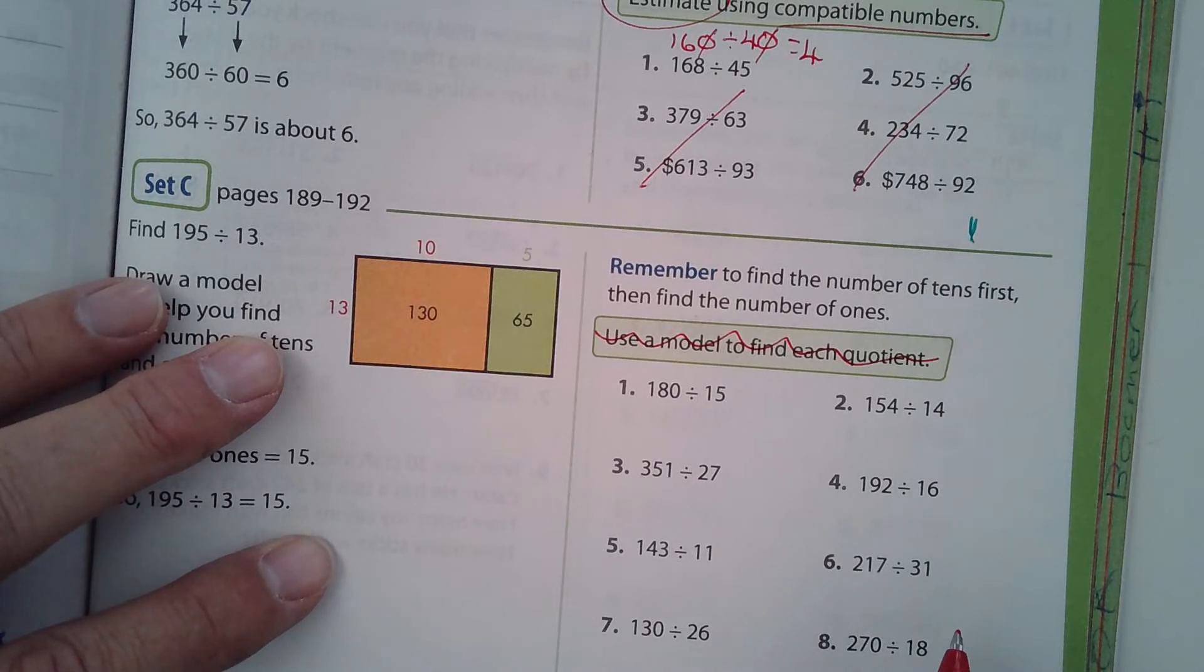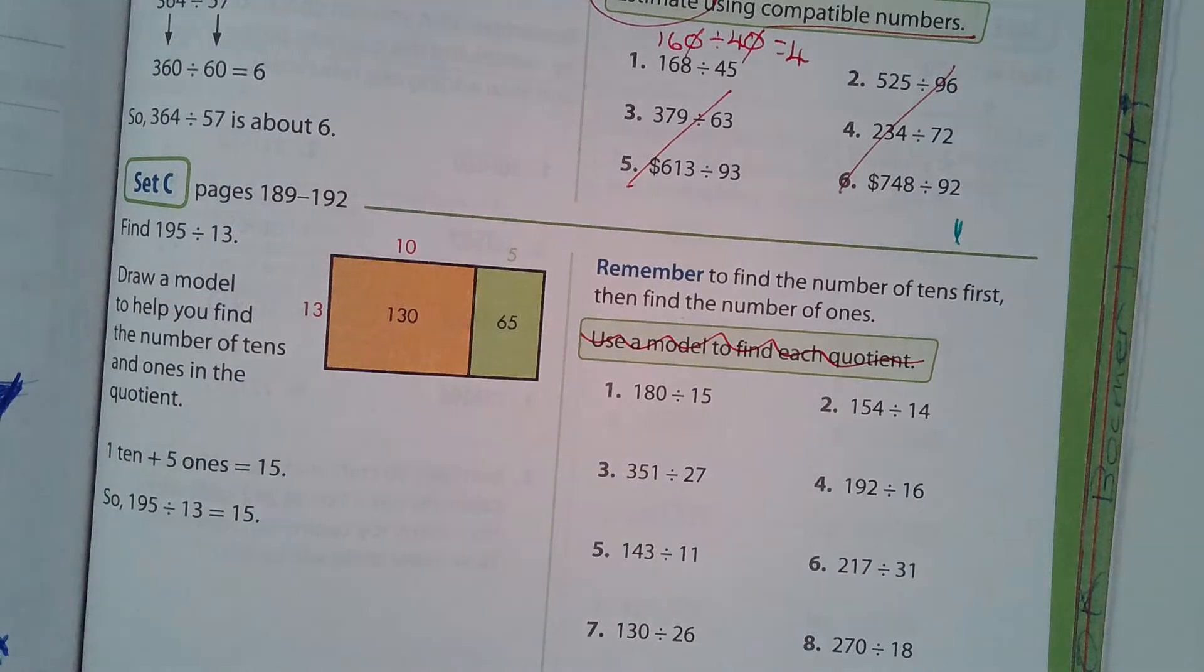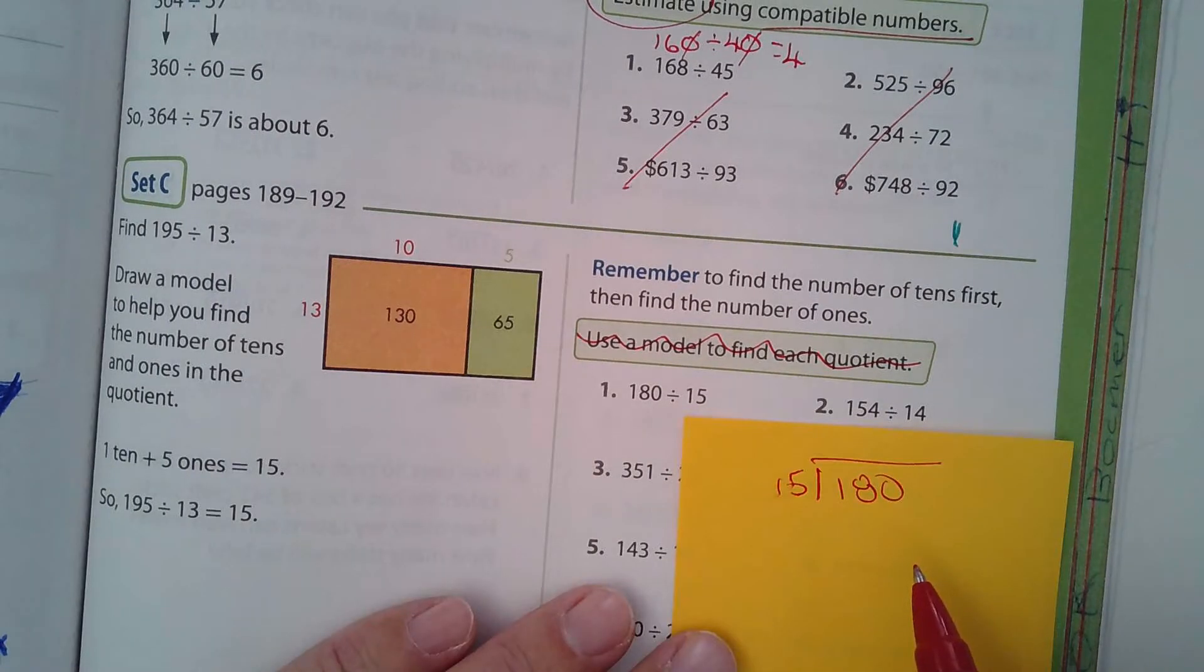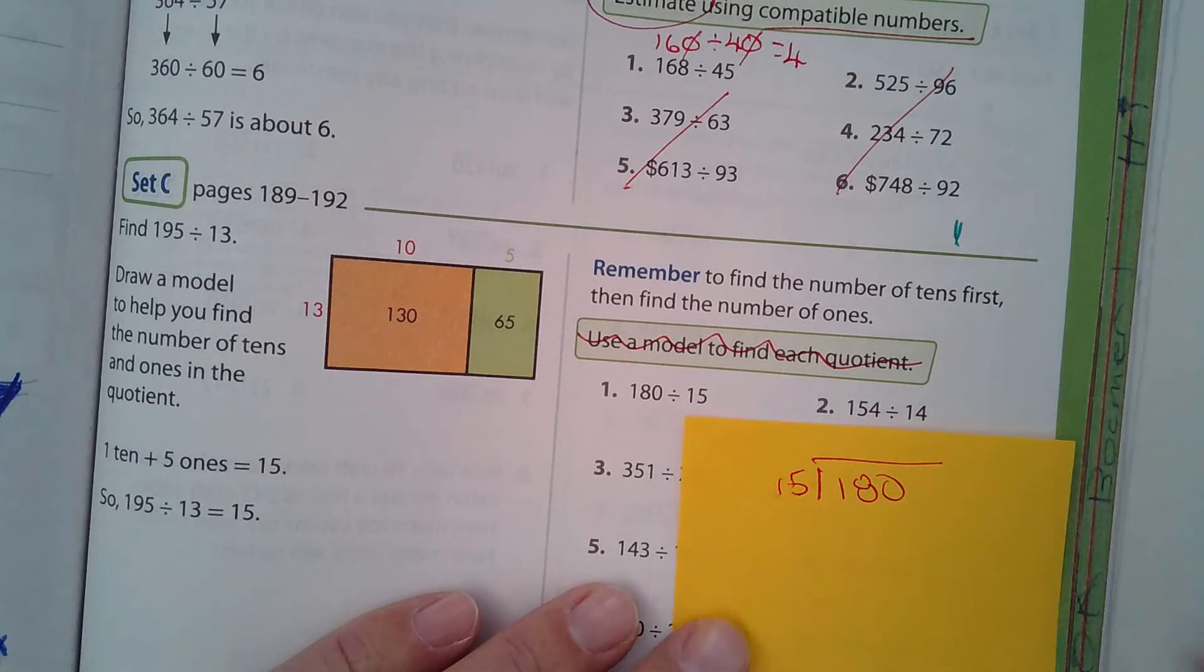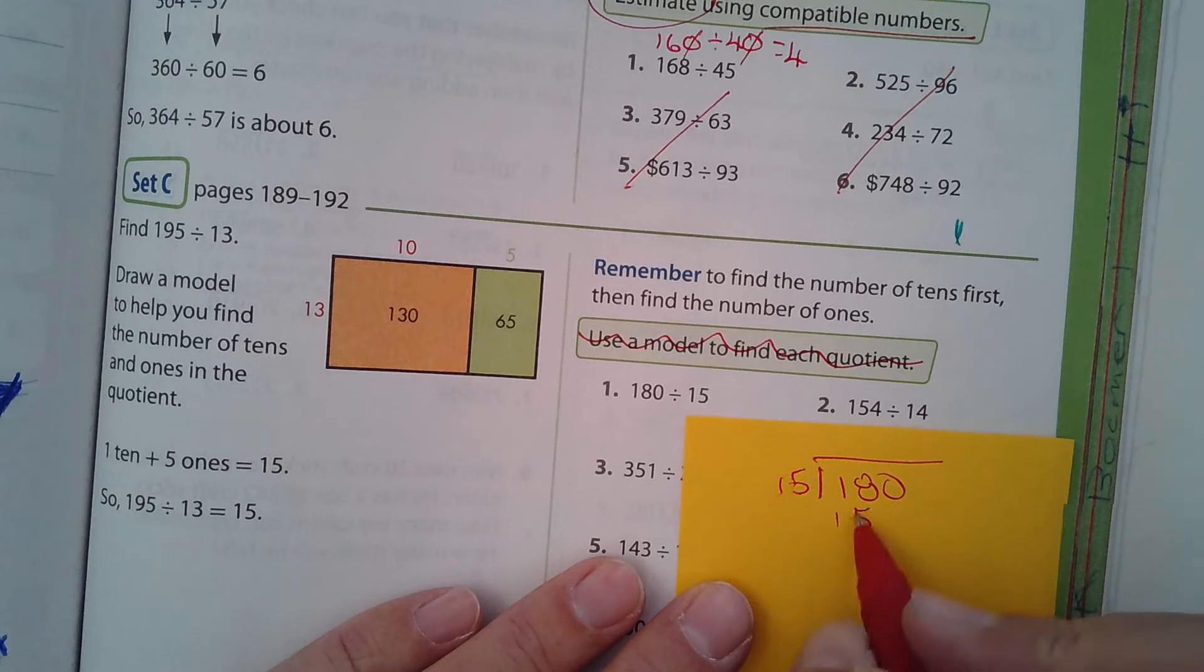Let's go down to the bottom of the page here. I'm looking at set C now. And it says use a model to find each one. Just cross that out. I'm not worried about models. But again, some of these you can just do in your head. And I'm going to look at number one, for example, here. So this is 180 and it's being divided by 15. So I know that 15 goes into 18 once. What's left over? Three. What do I bring down that I haven't used? The zero. What's a three and then a zero? That's 30. How many times does 15 go into 30? Twice. The answer is 12.